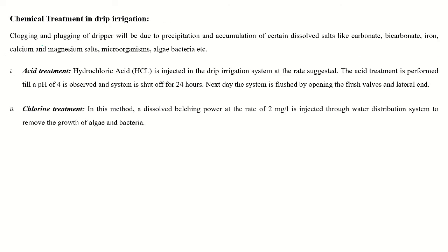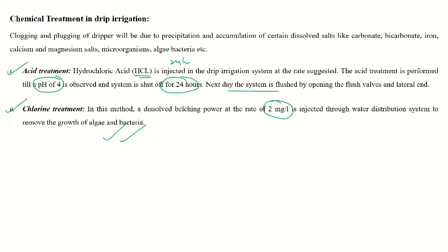In the drip irrigation system, the major problem is clogging. To avoid clogging, we need frequent cleaning of the main, sub-main, and filtration units through chemical treatment. The first is acid treatment, using hydrochloric acid (HCl) injected into the drip system, maintaining a pH of 4. The system is left for 24 hours, then cleaned by opening all flush valves of the main, sub-main, laterals, and drippers. The second is chlorine treatment, where bleaching powder at 2 mg/liter is injected into the distribution system. The system is shut down for 24 hours, then flushed with high pressure to clean algae and bacteria.